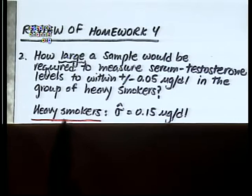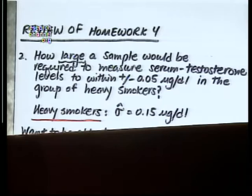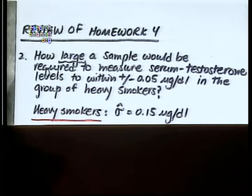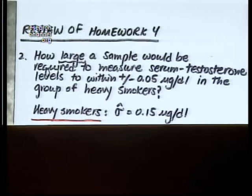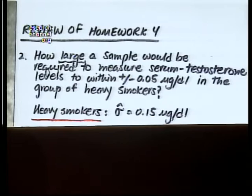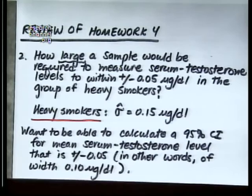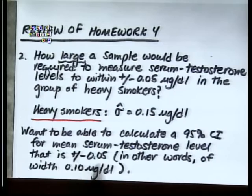One homework problem asked how large a sample would be required to measure serum testosterone levels to within plus or minus 0.05 micrograms per deciliter in a group of heavy smokers. We knew from the previous study that the standard deviation of serum testosterone in heavy smokers was about 0.15 micrograms per deciliter. From an estimation standpoint, we want a 95% confidence interval of width 2 × 0.05, or 0.1 micrograms per deciliter.